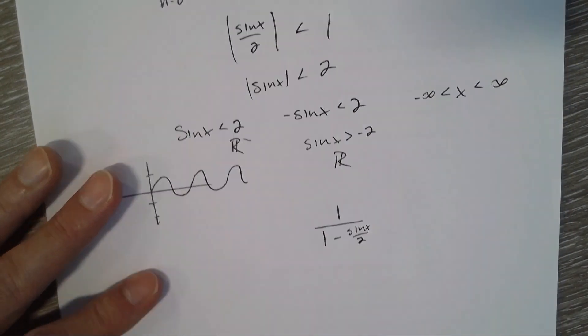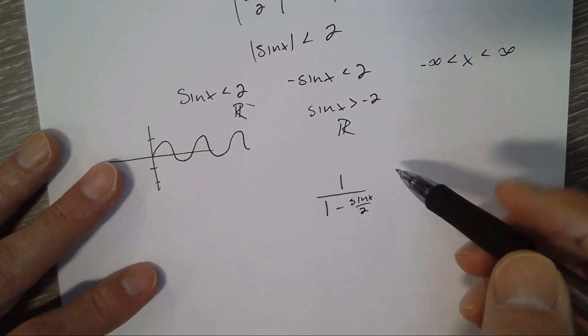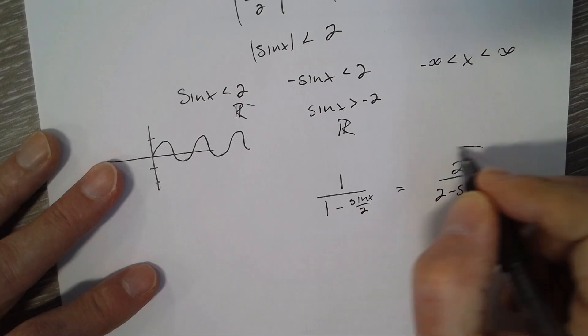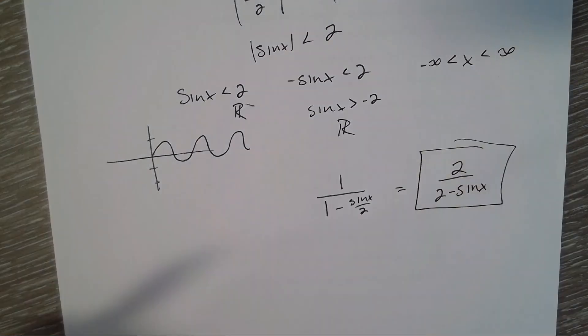And that's our answer. Simplifying, I could multiply the top and bottom by 2. So I get 2 over 2 minus sin x. That's the sum of all of them in an infinite geometric series.